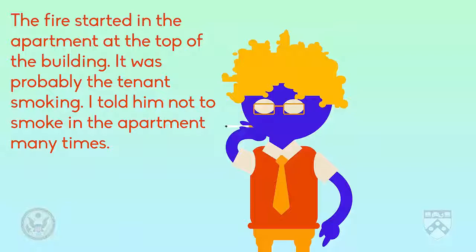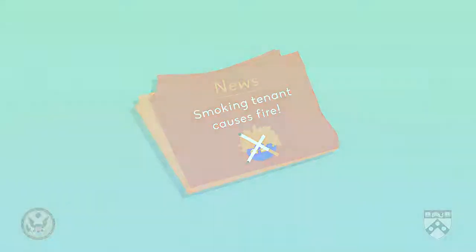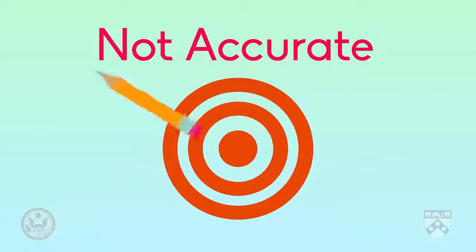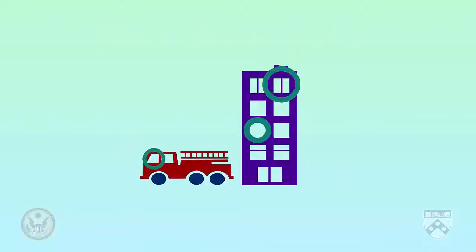Now, if the journalist decided to stop here and only interview the landlord, the story that she writes would say that the tenant — the person who rents the apartment from the landlord — is responsible for the fire. But this would not be telling the complete story, and so the journalist would not be reporting the story accurately. The journalist needs to talk to other sources and get multiple perspectives.